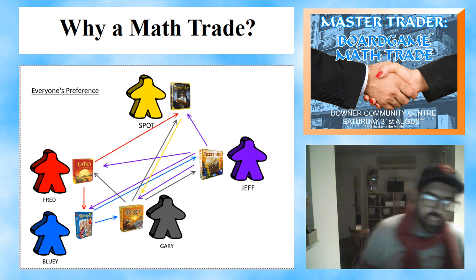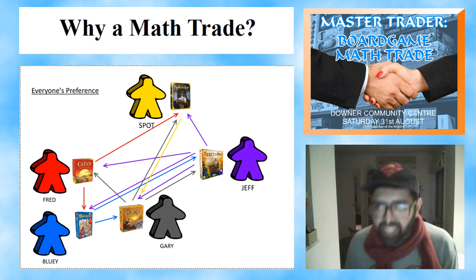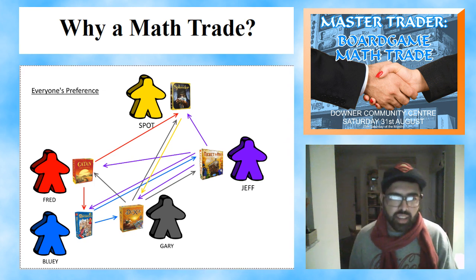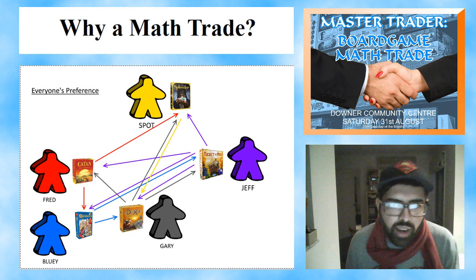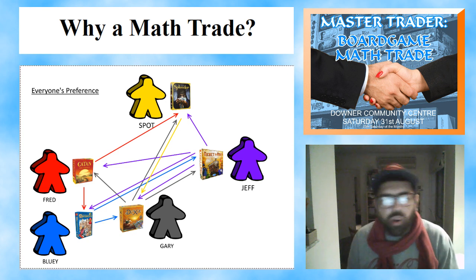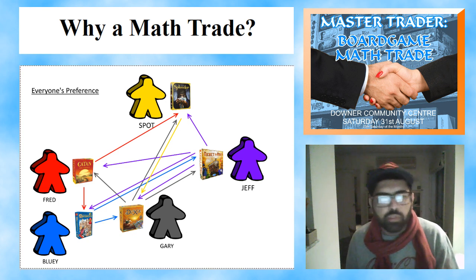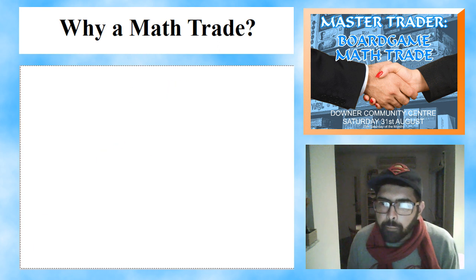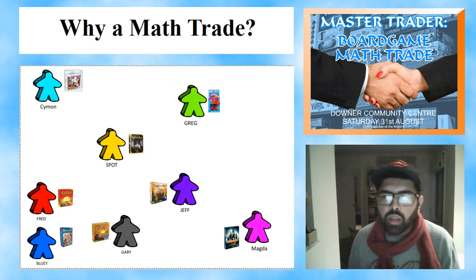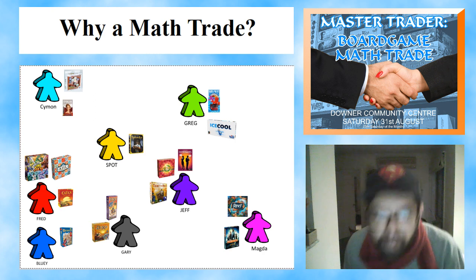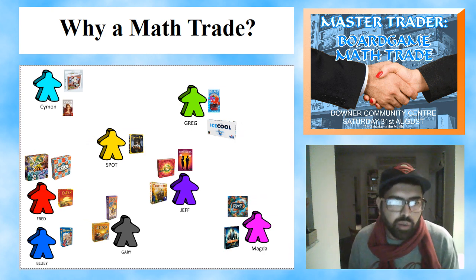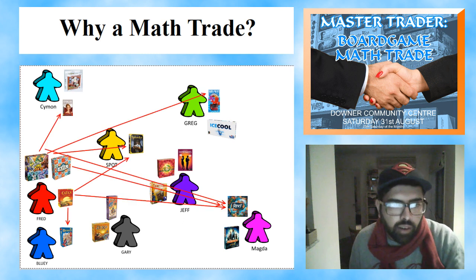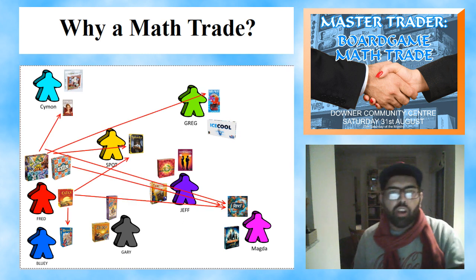Now you've got to check in everyone's preferences — it's not as easy to do this five-person trade as it was a three-person trade. You can already start to see the problems we're going to be facing. Throw in more people with multiple games, and things are going to get very, very complicated very quickly.